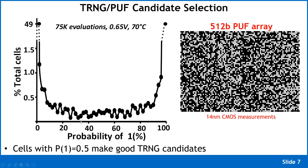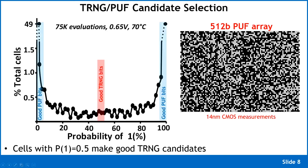There is also a bunch of cells with a probability of producing a one anywhere between 0 and 100% — these are the bad PUF cells that don't consistently produce either a zero or a one. The speckle pattern shown here is from 14-nanometer measurements of a PUF array output.